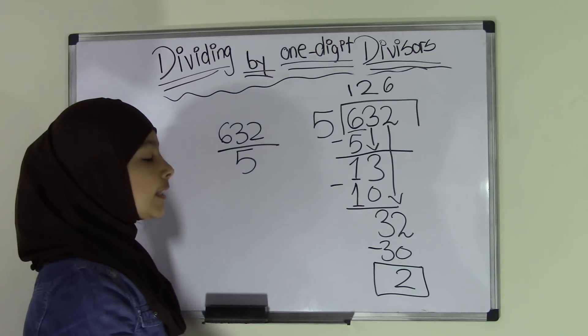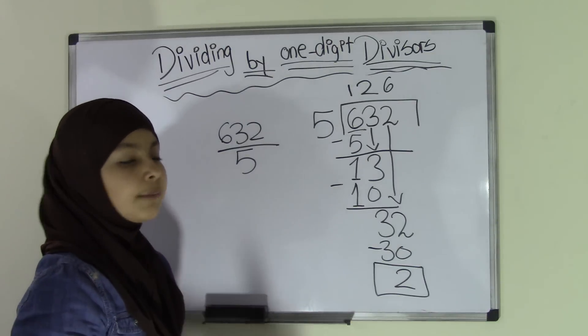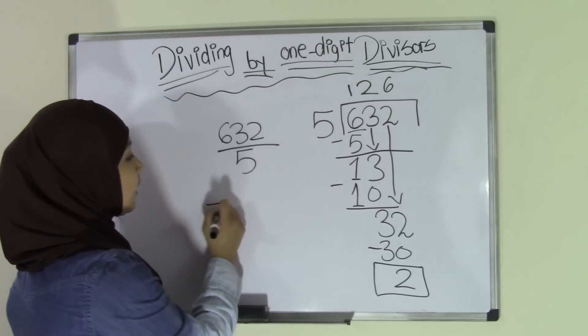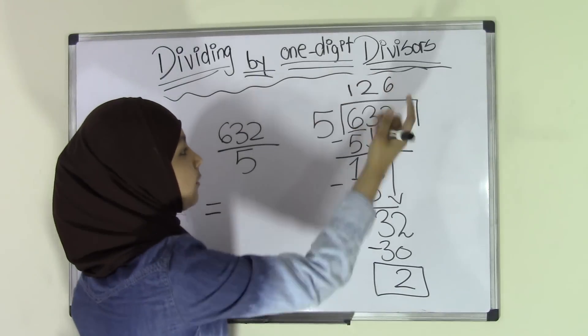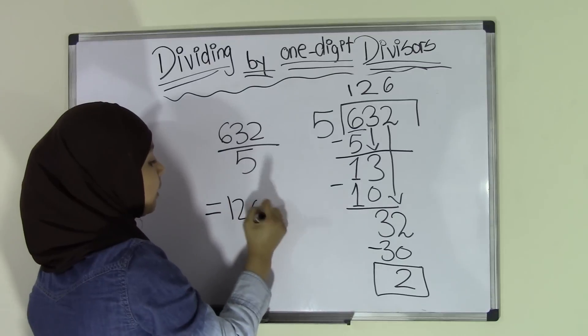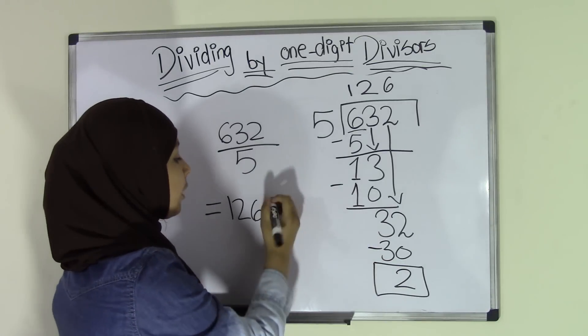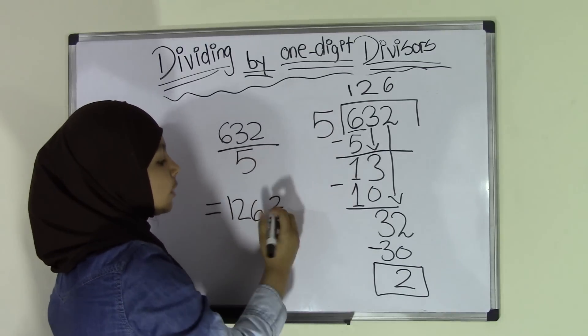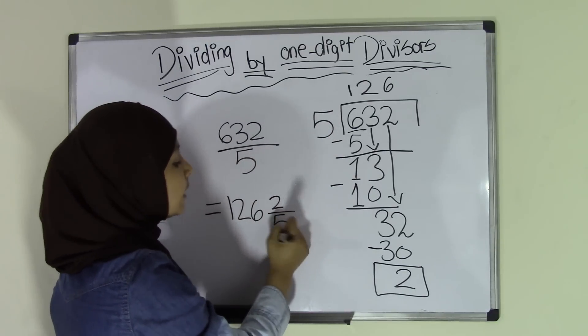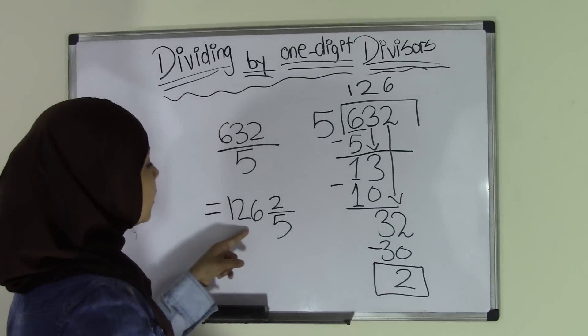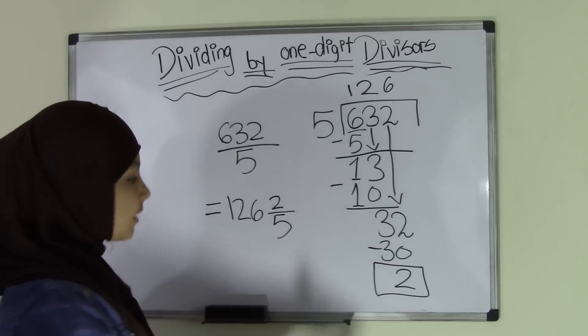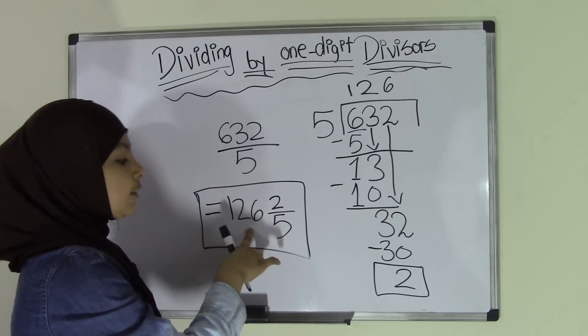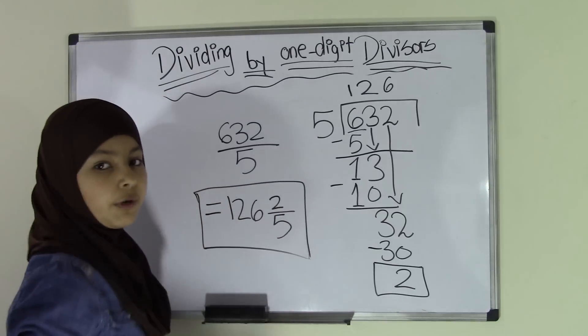So that means that we have 2 as a remainder. Now, in this case, we're going to have our quotient as an improper fraction. So whenever you're writing your improper fraction, the first thing that you're going to write is your quotient that you have. So that's going to be 126. And then you're going to look at your remainder. You're going to write this as your numerator and your actual divisor as your denominator. That means your improper fraction is going to be 126 and two-fifths.